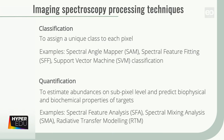In contrast, quantification methods allow the determination of material abundances in terms of percent fractional cover, or the estimation of material contents and properties. Well-known examples are the spectral feature analysis, the spectral mixing analysis, and the broad field of radiative transfer models. In the following, we will take a closer look at some common techniques.